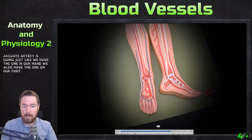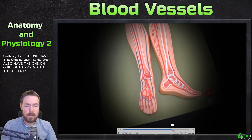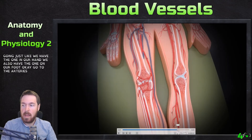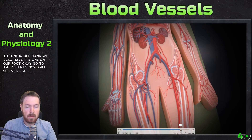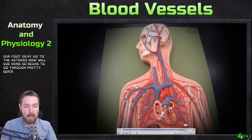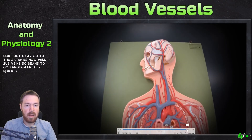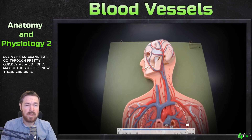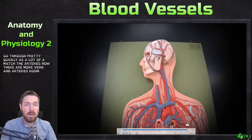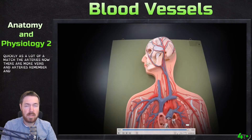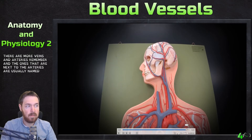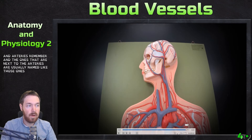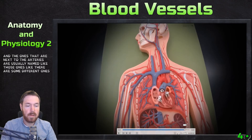Now we also have veins. I'll go through these fairly quickly because a lot of them match the arteries. There are more veins than arteries, and the ones next to arteries are usually named similarly, though there are some different ones.